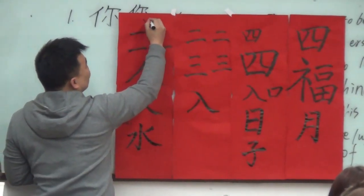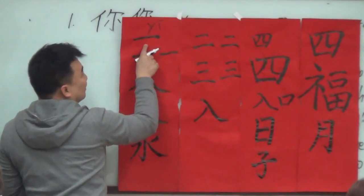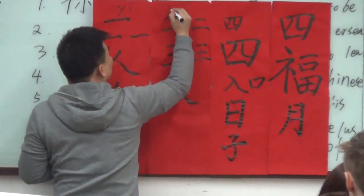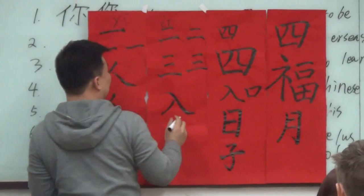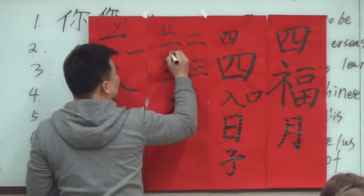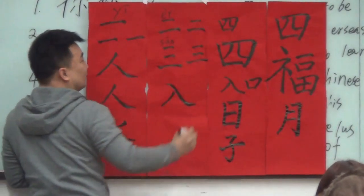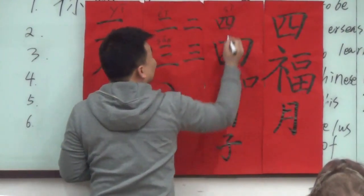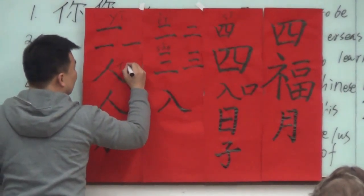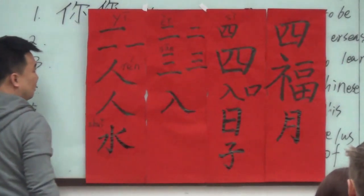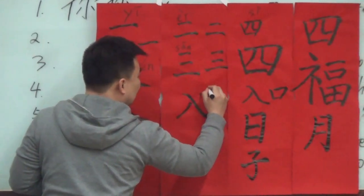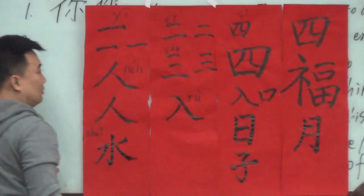这个是... 这样是... 一... 一... 二... 二... 三... 三... 四... 人... 入... 入...